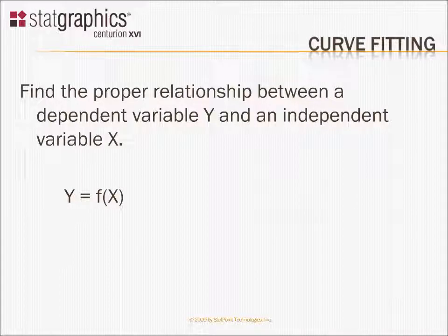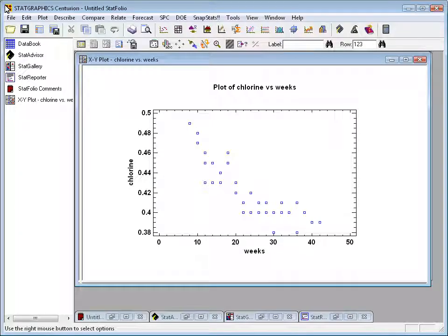The topic of this video is curve fitting, finding the proper relationship between a dependent variable Y and an independent variable X. The data we're going to look at comes from the famous book by Draper and Smith called Applied Regression Analysis. It consists of 44 observations showing the amount of chlorine in samples of a product as a function of the age of the product in weeks. Our goal will be to fit a curve to this data so that we can answer some important questions.